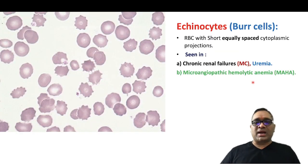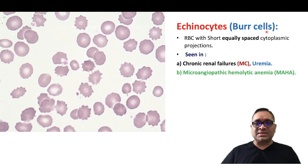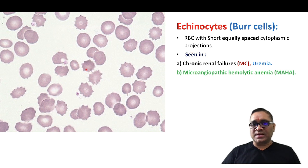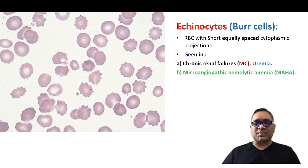Now look at the echinocytes. Echinocytes are also known as burst cells. They have RBCs with short, equally spaced cytoplasmic projections, as you can see.